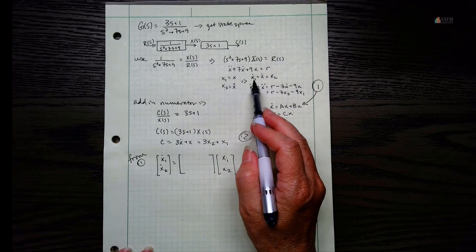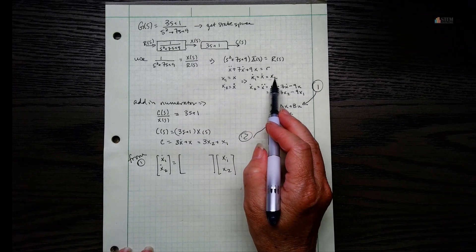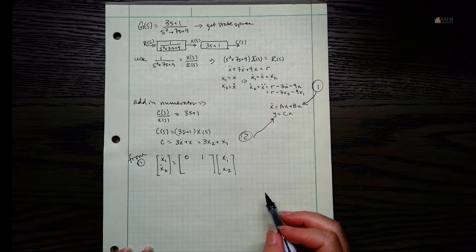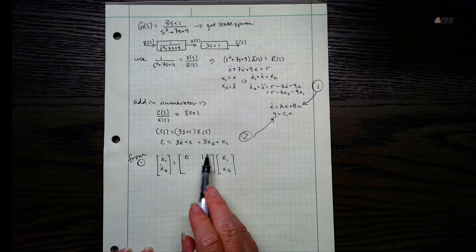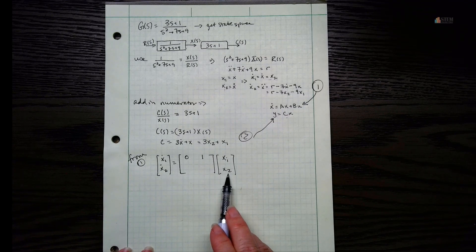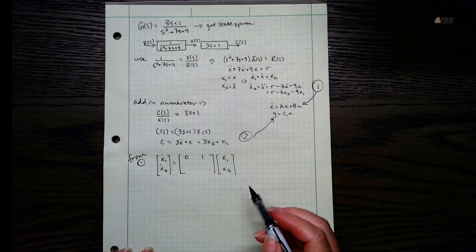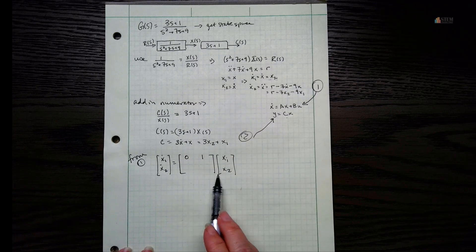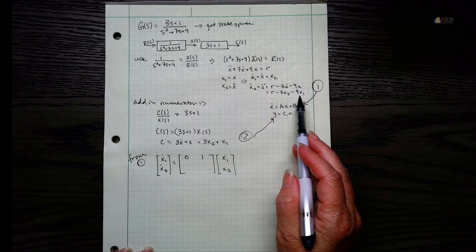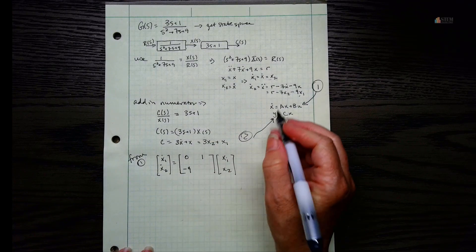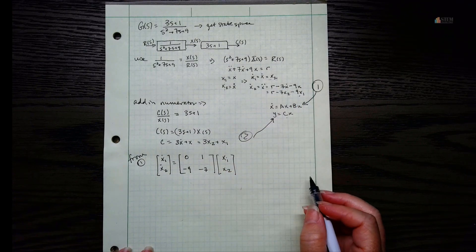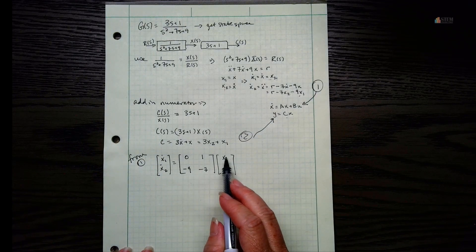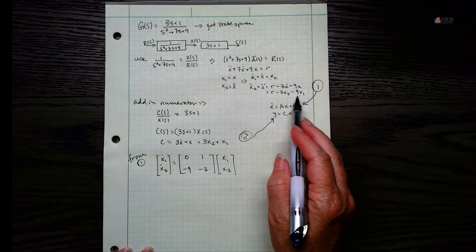Now our A matrix is just going to be the coefficients here where we don't have R - we want the coefficients of the state variables X1 and X2. So if we look, if we go to the X1 dot row right here, X1 dot is equal to X2. So in matrix form, we'd write a 0 and then a 1, because when I multiply these, I'm going to have 0 times X1 plus 1 times X2, which gives me this. And then for the second one, we go to X2 dot for this second row here. Coefficient for X1 is negative 9, coefficient for X2 negative 7. So then that'll give me negative 9 X1 minus 7 X2, which is what we have here.